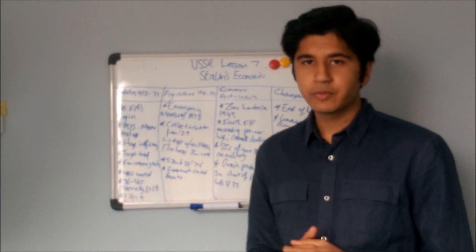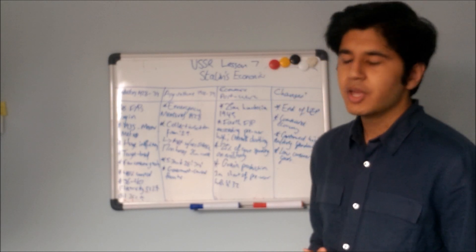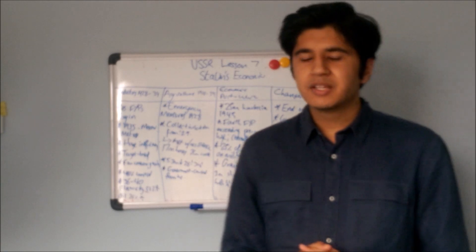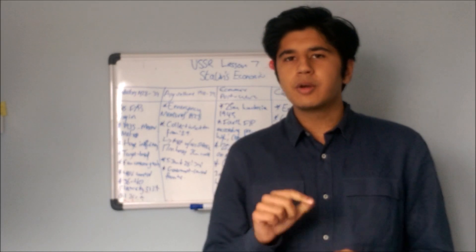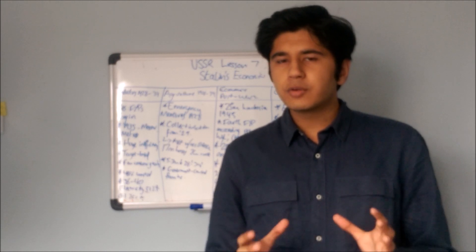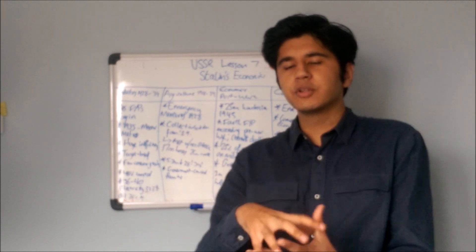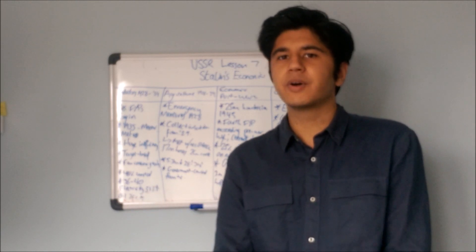Emergency measures ends the NEP. It begins grain requisitioning again. And by 1929 you have the start of collectivization, which was the act of saying to farmers, look, you don't own your farm anymore. We own your farm. And also, you're not just in charge of your farm anymore. We're going to smush lots of farms together to create these massive farms.